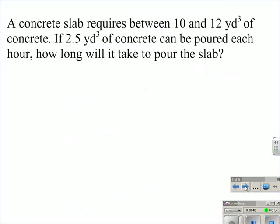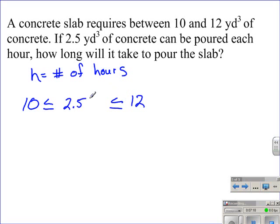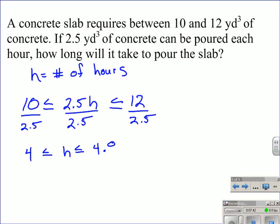Here we have a concrete slab that requires between 10 and 12 cubic yards of concrete. If 2.5 cubic yards of concrete can be poured each hour, how long will it take to pour the slab? So we need to find out a range of values. The minimum amount, well first we'll define our variable, h is going to be the number of hours to pour the concrete. We need a minimum of 10 cubic yards of concrete and a maximum of 12 cubic yards of concrete. That implies a compound inequality, and in the middle we're going to take the number of cubic yards of concrete per hour, 2.5, and multiply it by h. That'll tell us how much concrete we can pour. To solve that we divide each section by 2.5. 10 divided by 2.5 is 4, which will give us 4 is less than, 2.5h divided by 2.5 is h, and 12 divided by 2.5 is 4.8. So it'll take between 4 and 4.8 hours to pour this concrete.